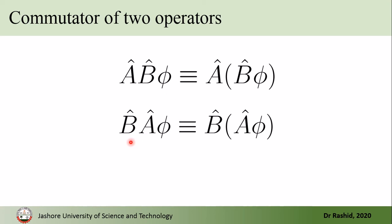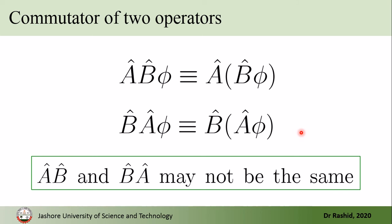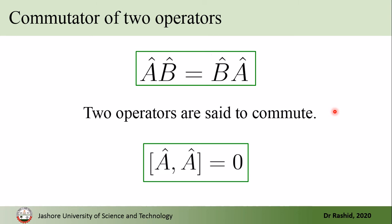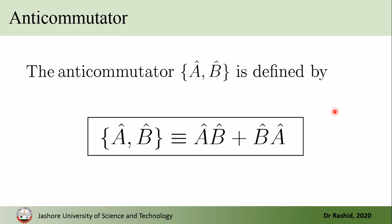By this I mean that AB-phi could be different from BA-phi. If we say AB-phi, the closest one to phi — that is B — first acts on phi, then A acts on this result. Similarly for BA-phi, B acts on the result of A-phi. So A-hat B-hat and B-hat A-hat could be different. Of course, if they are the same, the commutator between them is zero, and we say that these two operators commute. An operator also commutes with itself.